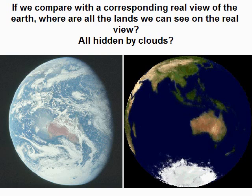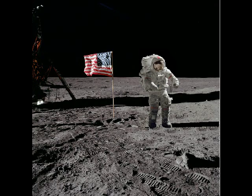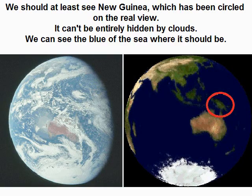All hidden by clouds? We should at least see New Guinea, which has been circled on the real view. It can't be entirely hidden by clouds — we can see the blue of the sea where it should be.